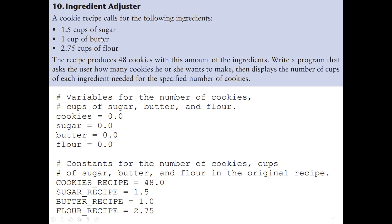The given amounts are 1.5 cups of sugar, 1 cup of butter, and 2.75 cups of flour. So we have constants for the number of cookies, cups of sugar, butter, and flour in the original recipe. Our first constant variable is cookies_recipe, which is 48. The recipe produces 48 cookies. The first ingredient constant is sugar_recipe, which is 1.5; butter_recipe is 1.0; and flour_recipe is 2.75.